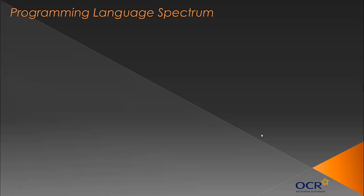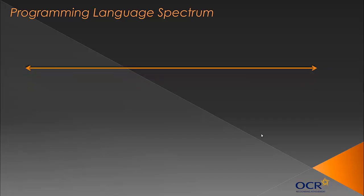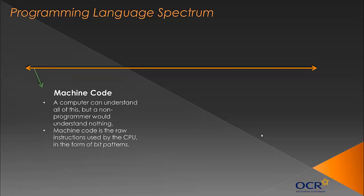We're doing something of a pre-recap here because we have a spectrum for programming languages. At one end we have machine code, which is essentially binary — zeros and ones, just lots of bit patterns. A computer can understand all of this, but someone who's not a programmer would just see zeros and ones and it would mean nothing. Machine code are the raw instructions used by the CPU in the form of bit patterns.